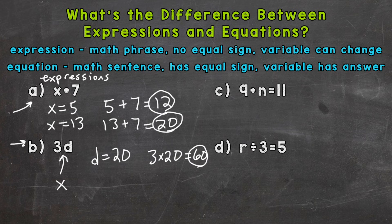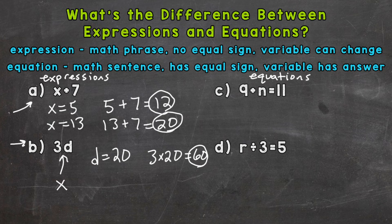So expressions again: math phrase, not the full sentence, no equal sign, and the variable can change. Now let's move to examples C and D — both of these are equations. They are the full math sentence, they have an equal sign, and the variable has a defined or set answer. A nice easy way to tell the difference: equations sounds like equal, so whenever you hear equation, you know those are the ones that have an equal sign.